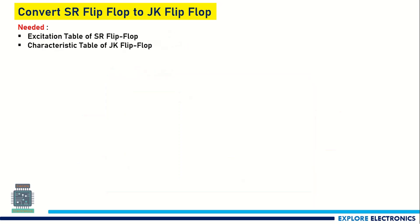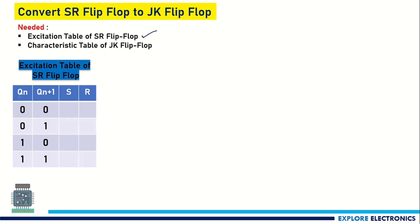Now let us write the excitation table of SR flip-flop first. I have already explained in the previous video how to write the excitation table. Here Qn is the present state output and Qn+1 is the next state output. For the combinations of present state and next state: for 0→0, S=0 and R=X; for 0→1, S=1 and R=0; for 1→0, S=0 and R=1; and for 1→1, S=X and R=0. You can visit the previous video to know how to write the excitation table.